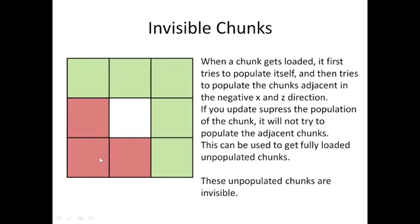To get an invisible chunk, you load a circle of chunks where you don't load the middle chunk but load all chunks around it. You make sure that some of the chunks in the lower-left corner, with the least x and z coordinates, are unpopulated. If you then load the middle chunk and update suppress the population of this chunk, it will itself get populated but will never populate the other three chunks — giving you three invisible chunks. The reason is: when the middle chunk loads, it first tries to populate itself by checking whether it's part of a 2x2 grid in the positive x and z direction. Only after it finishes this population will it try to populate the other three chunks. So if the chunk update suppresses the population, the other three chunks will never try to populate even though they are part of a loaded 2x2 grid, and you have permanently unpopulated chunks while the area around them is loaded.